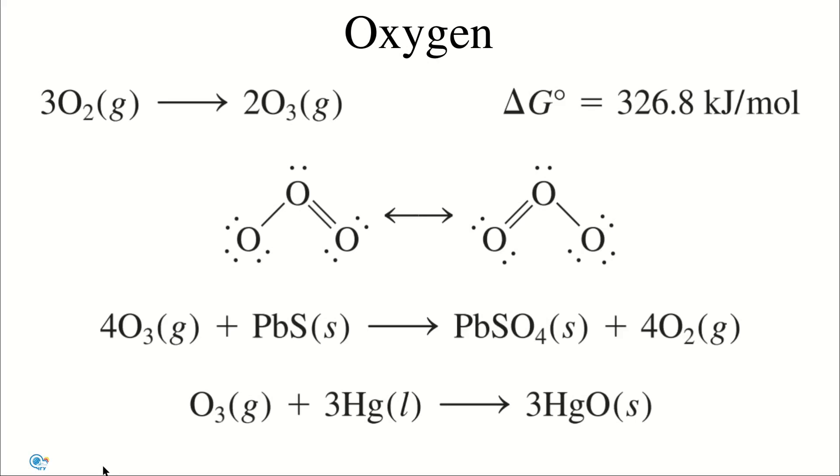Ozone is a rather toxic light blue gas. Its pungent odor is noticeable around sources of significant electrical charges, such as subway trains. Ozone can be prepared from molecular oxygen either photochemically or by subjecting oxygen to an electrical discharge. Because the standard free energy of formation of ozone is a large positive quantity, ozone is less stable than molecular oxygen. The ozone molecule has a bent structure in which the bond angle is approximately 116 degrees.